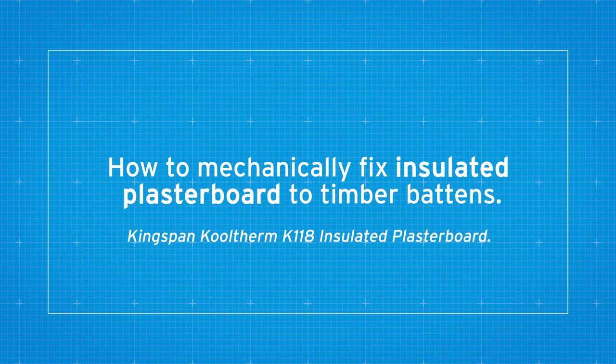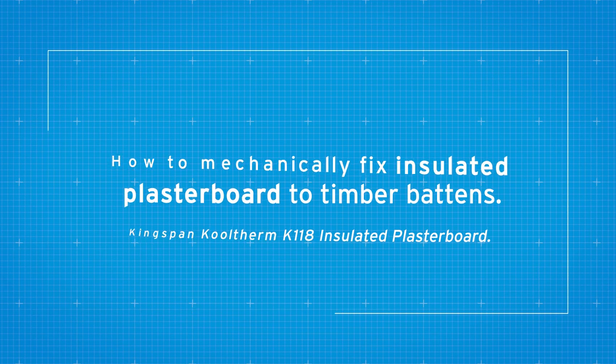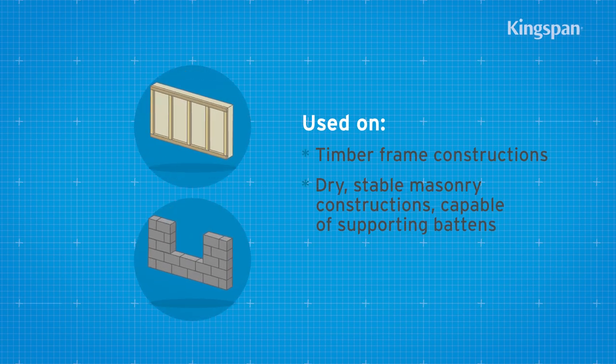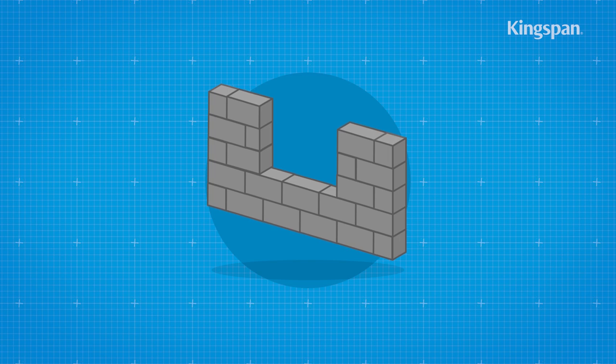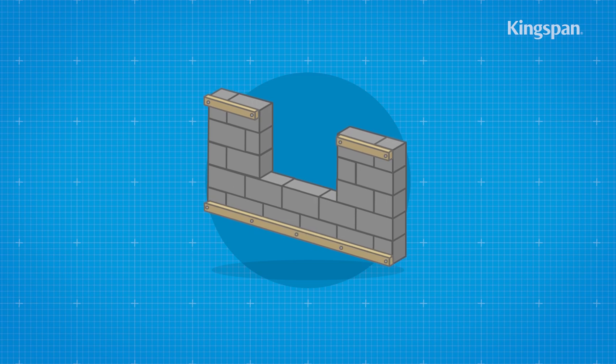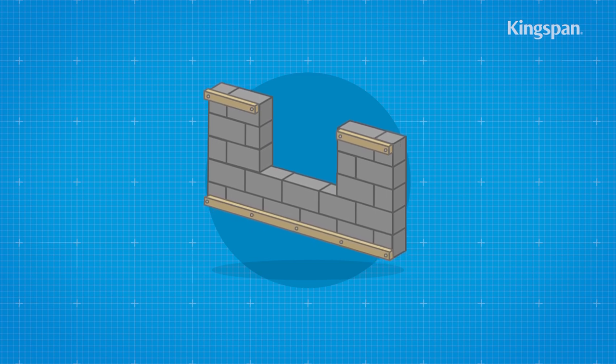How to mechanically fix insulated plasterboard. If insulating a construction other than timber frame, mechanically fix timber battens at the floor and ceiling around the room's perimeter.